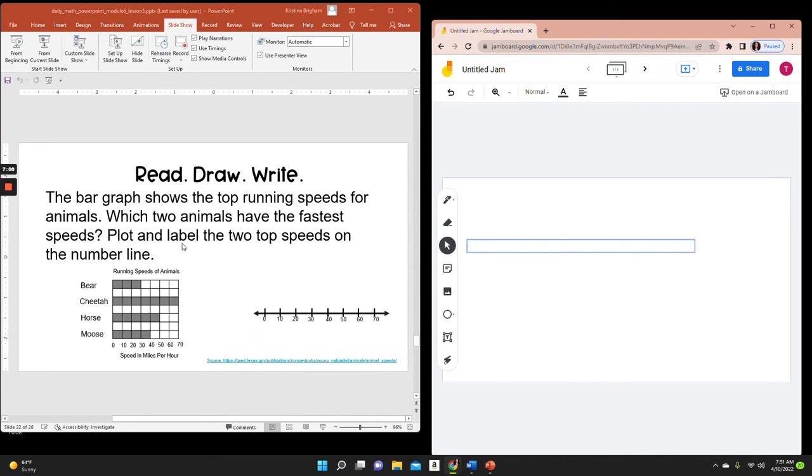Looking back at my question, it says, plot and label the two top speeds on the number line. The two top speeds are cheetah and horse. I plotted the cheetah's speed at 70 miles per hour. I plotted the horse's speed at 50 miles per hour.